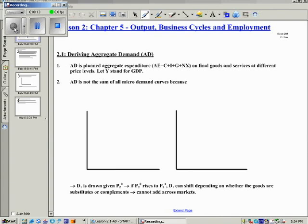Aggregate demand is planned aggregate expenditure on final goods and services at different price levels. Remember, aggregate expenditure is how much we would like to spend. It can be undertaken by consumers, firms, governments, as well as net exports. Let us use the letter Y to stand for GDP from now on.